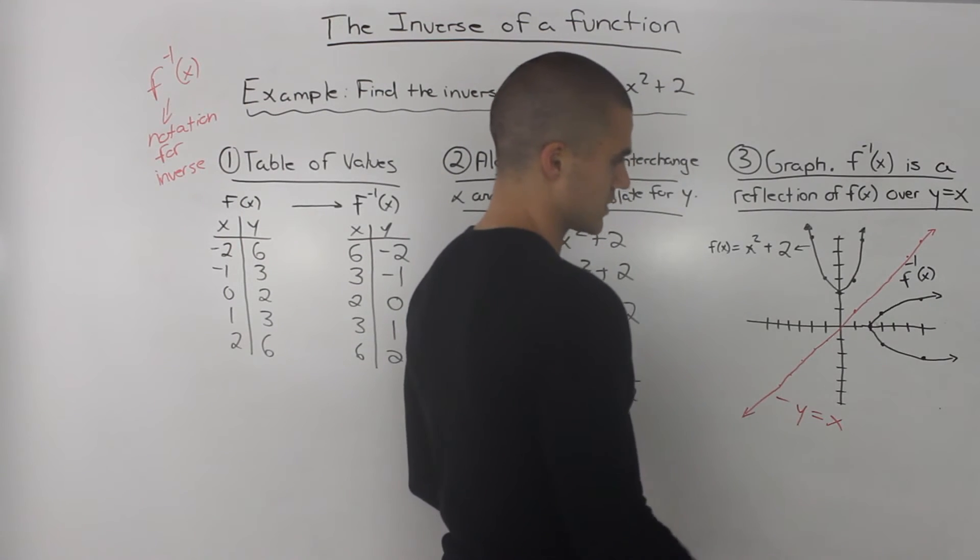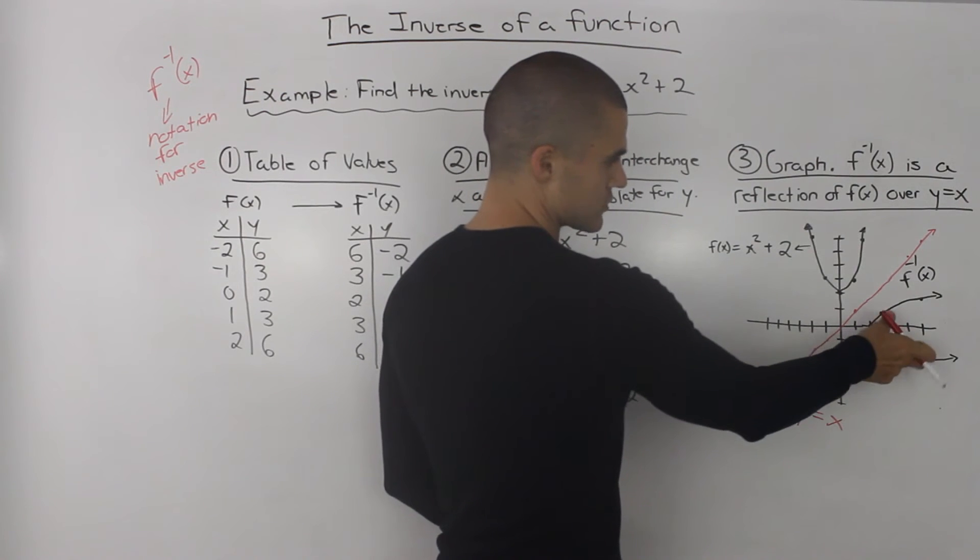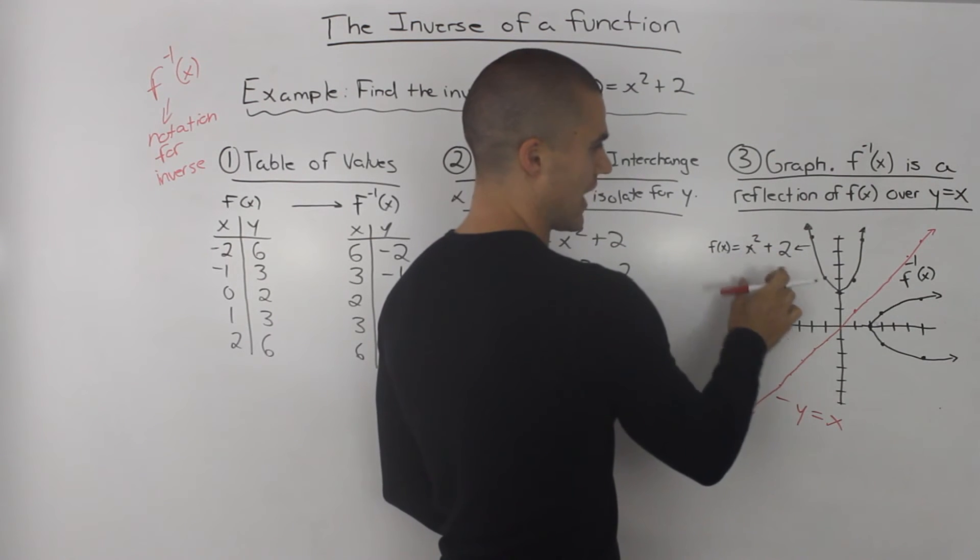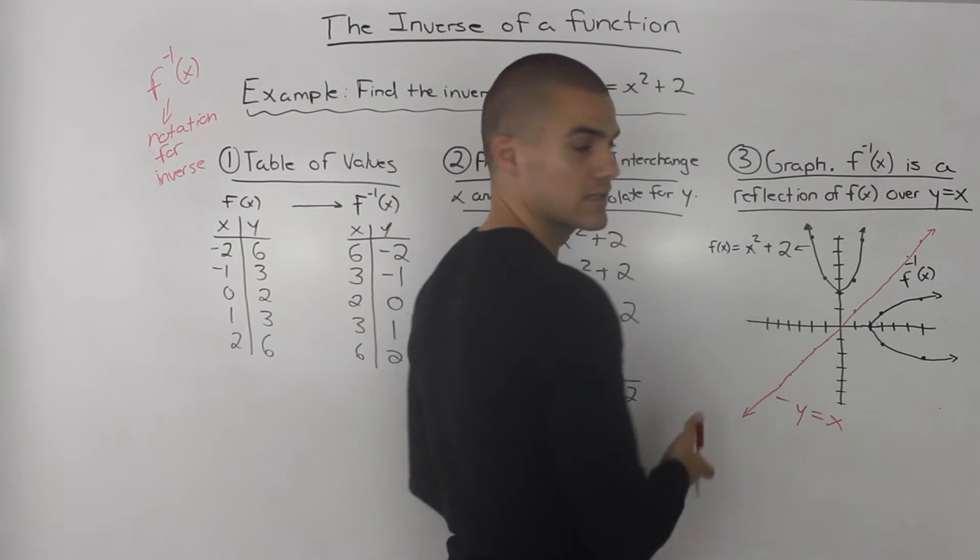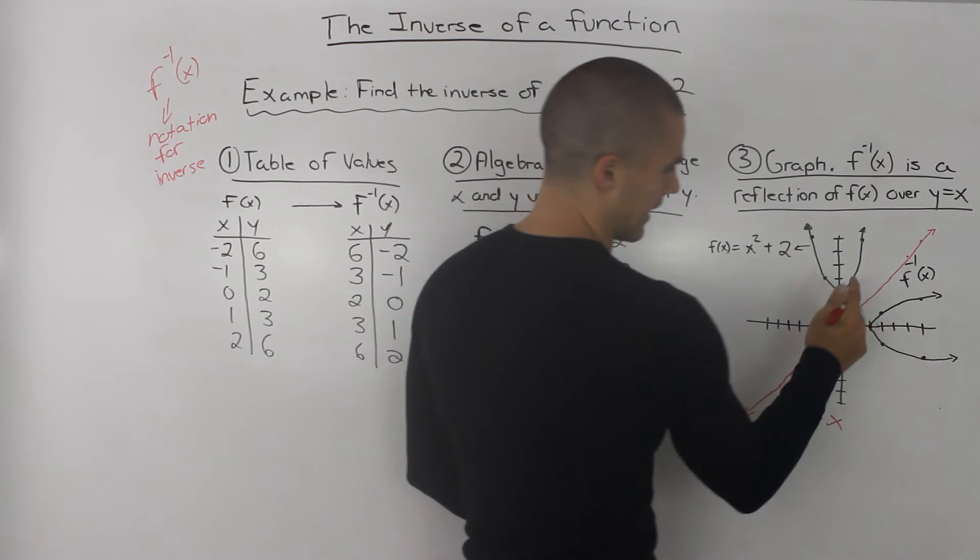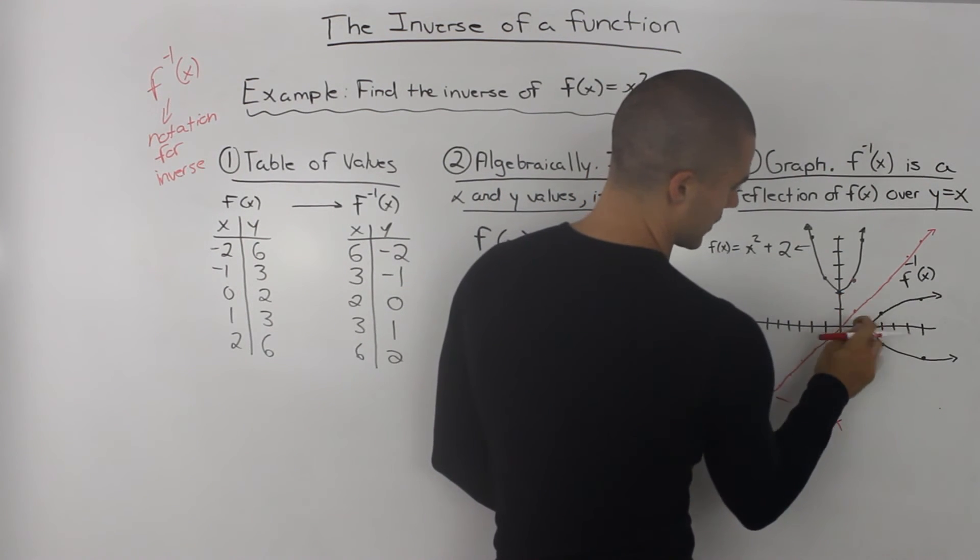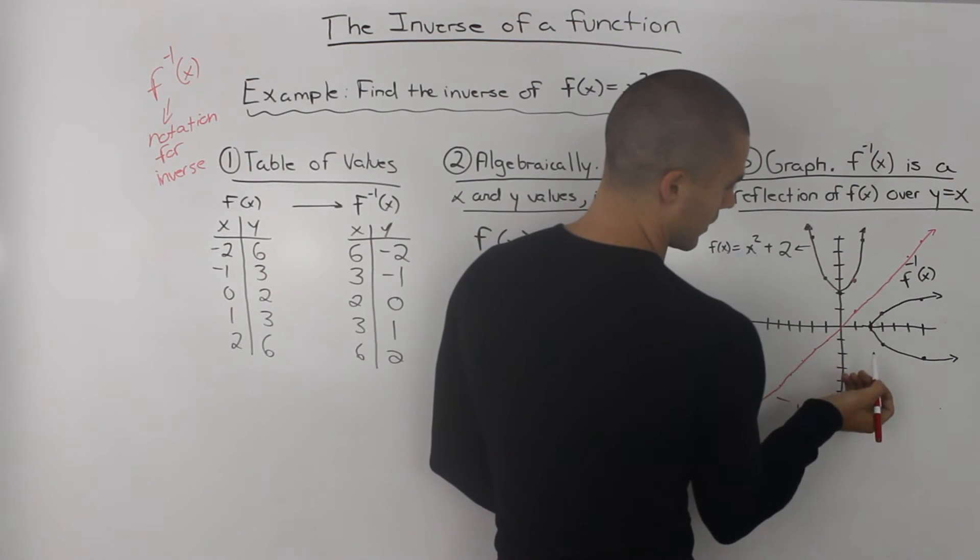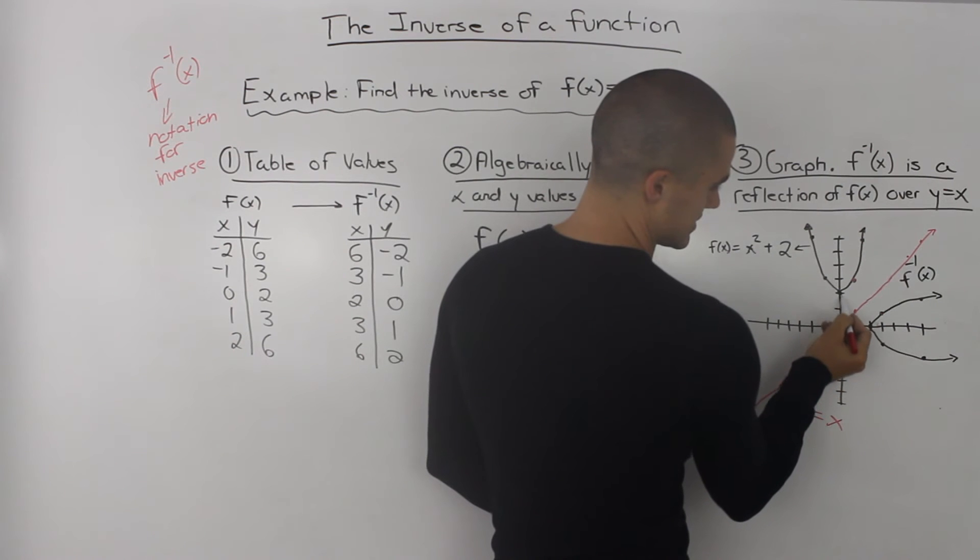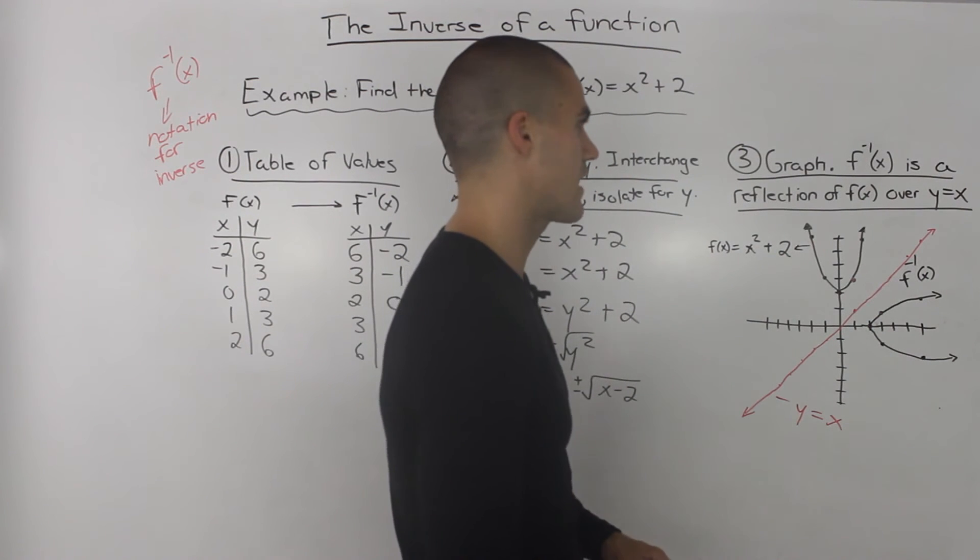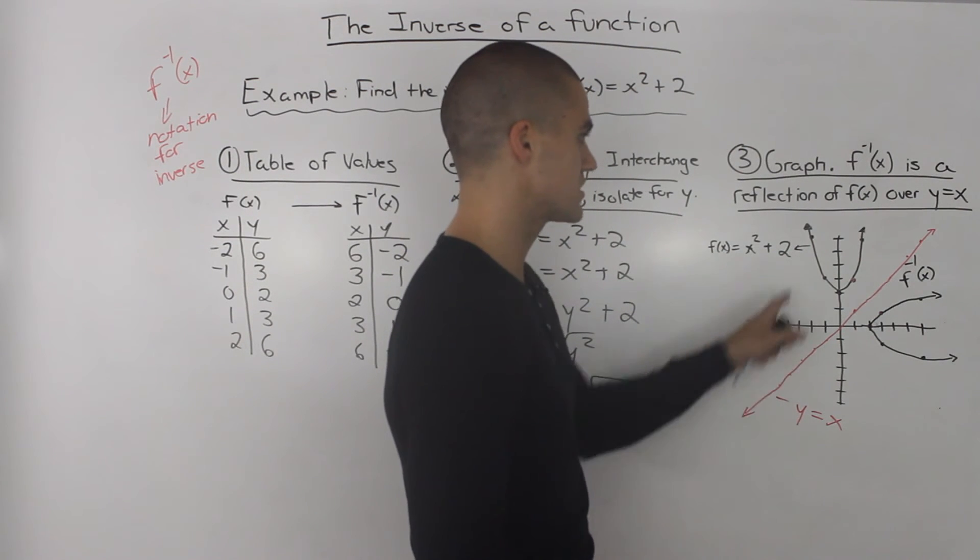Now if you look closely, the inverse is a reflection of the original function f(x) over the line y = x. So I drew this line y = x here. And each point, so this corresponding point, this is 1 and 3, corresponds to 3 and 1. This 0 and 2 corresponds to 2 and 0.